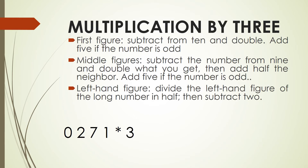For multiplication by 3, first we need to subtract the right-hand digit from 10 and double the result, adding 5 if the number is odd. In the middle figures, subtract the digit from 9, double what we get, add half of the neighbor, and add 5 if the number is odd. For the leftmost figure, divide it in half and then subtract 2.